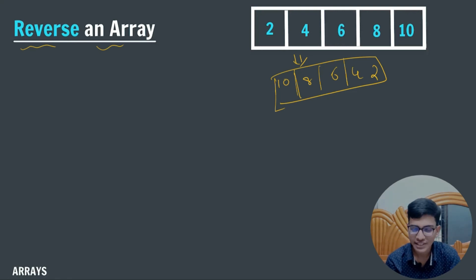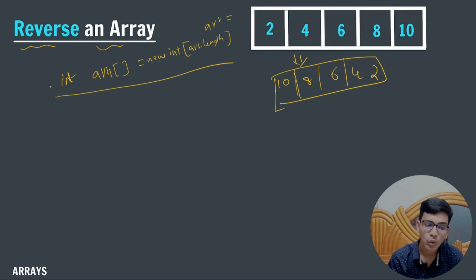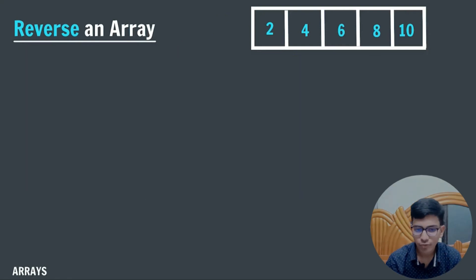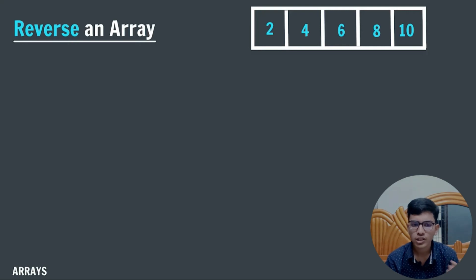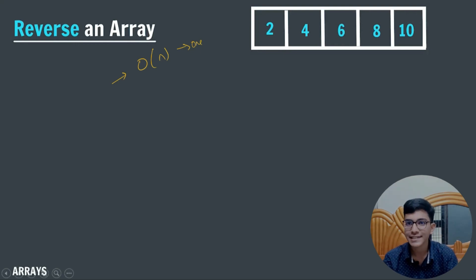When you start to think about this question, you might think to create a new array with the same size: arr1 = new int[arr.length]. But the catch here is we don't need to create another array. We are going to reverse the array in-place. This is not efficient because it will consume a lot of extra memory. We are going to reverse our array in just linear time complexity, meaning we run only one loop.